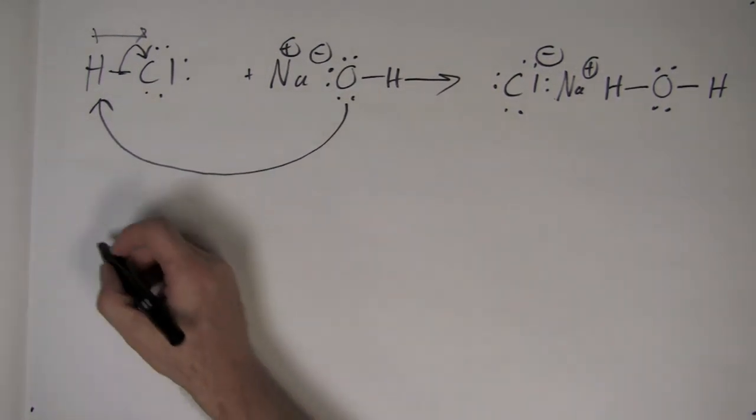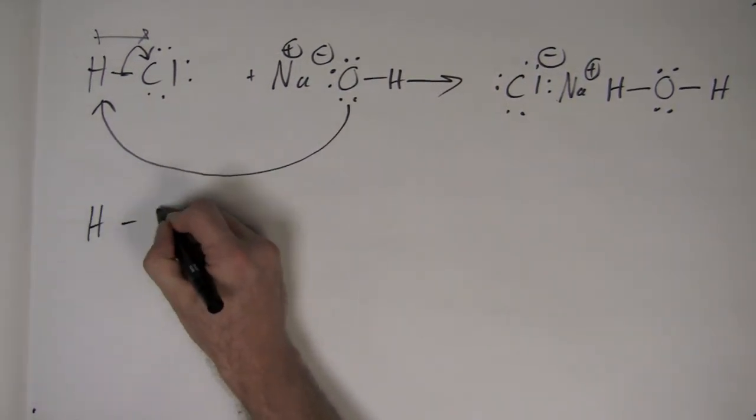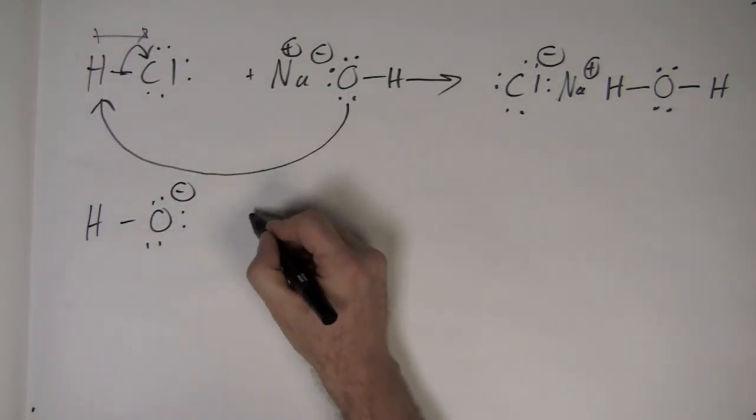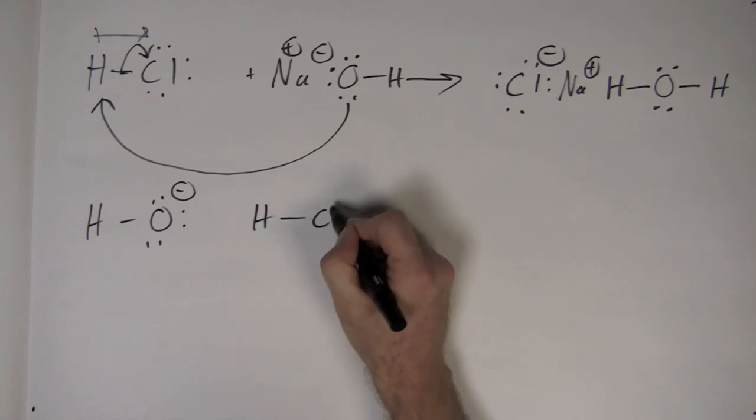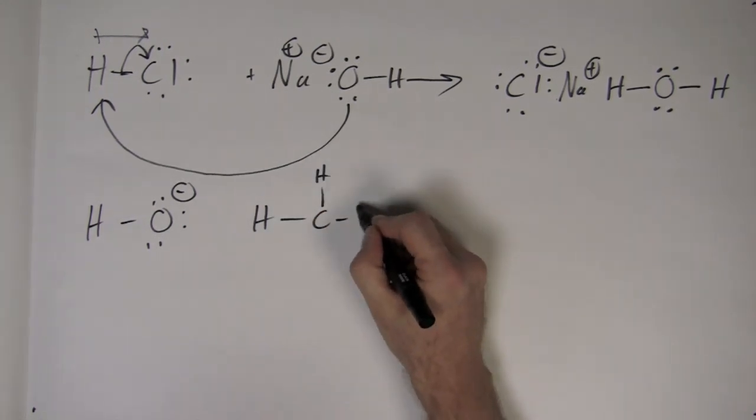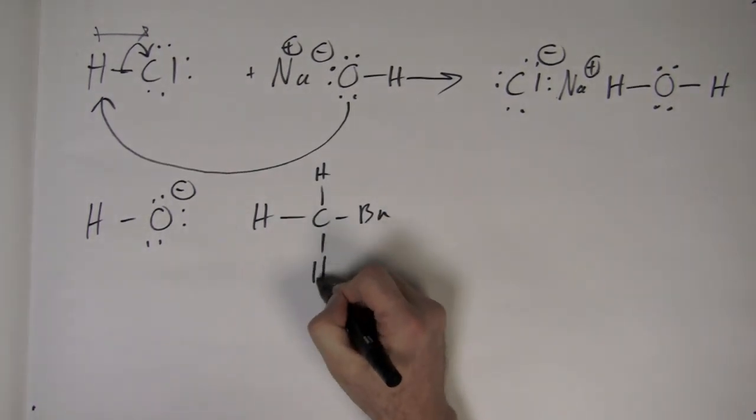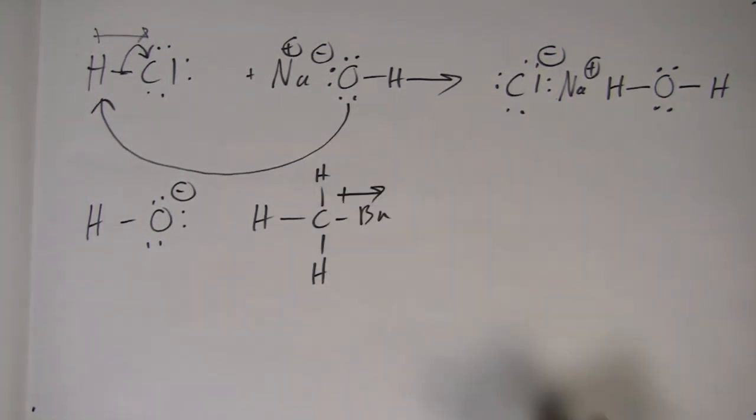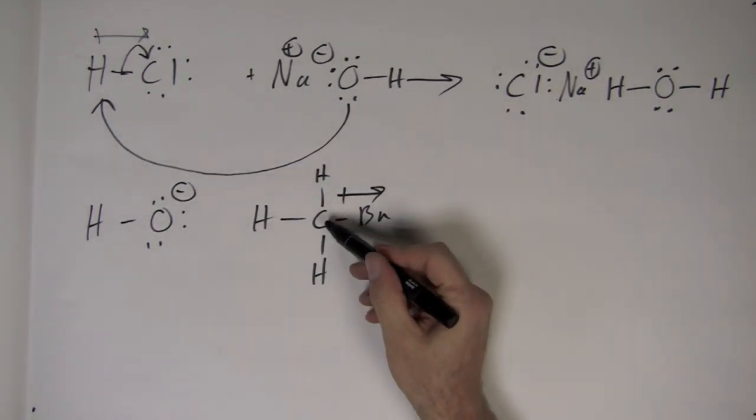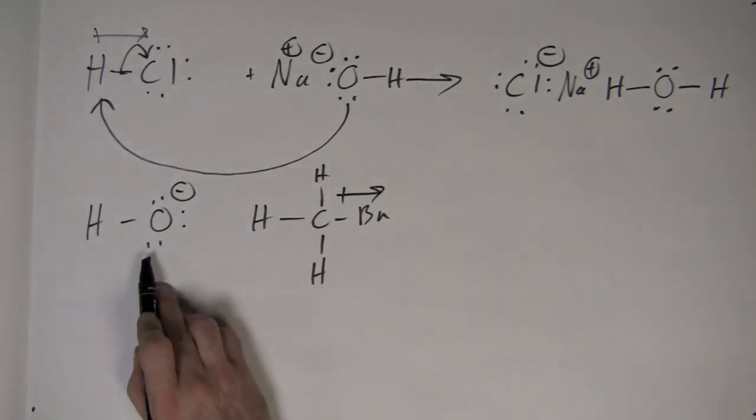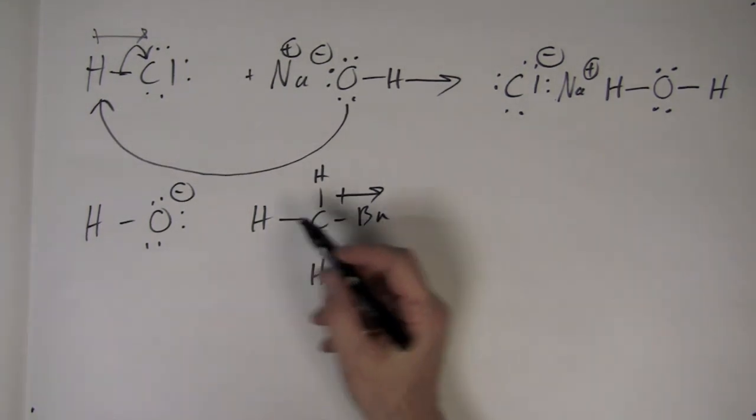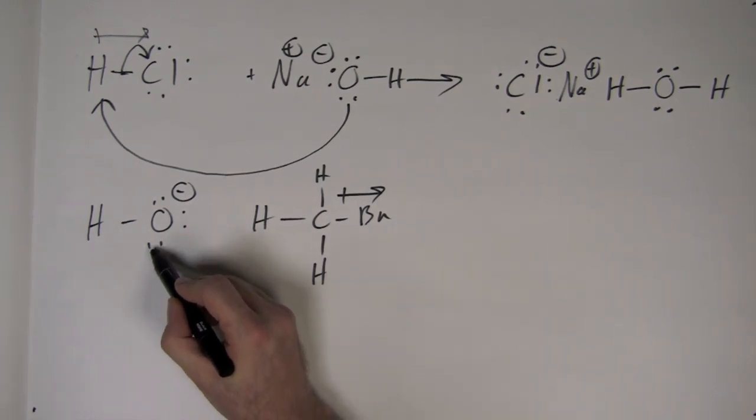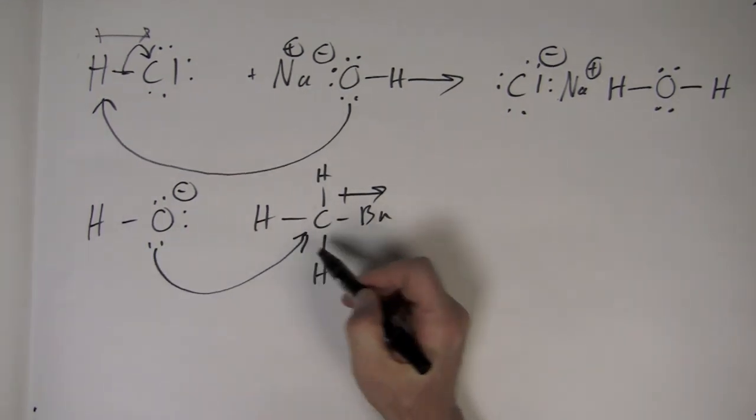Let's consider a hydroxide ion reacting with bromomethane. Bromine is electronegative, puts a partial positive charge on the carbon atom. We've got a negative charge on the oxygen. Electrons move, a lone pair of electrons move from the oxygen to the carbon atom.